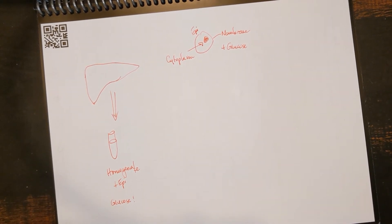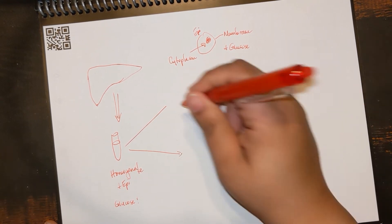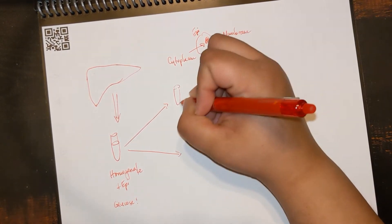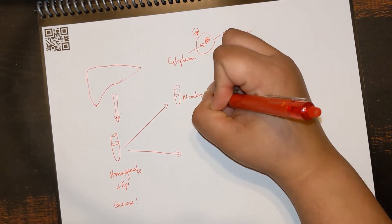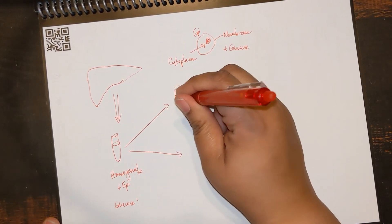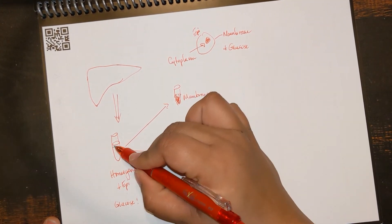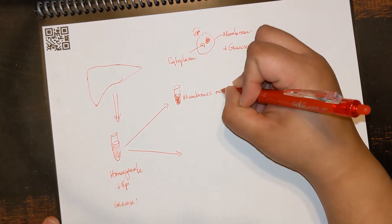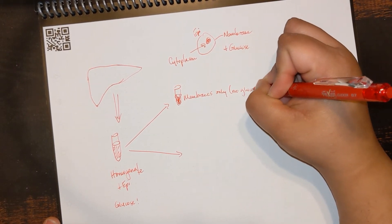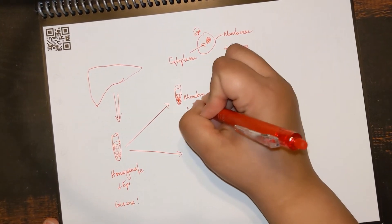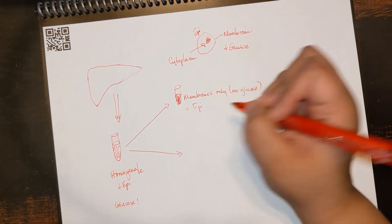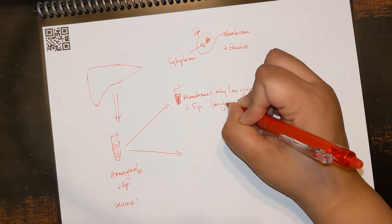He was able to see that a homogenate, even if all the components are not arranged into cells, is still enough for the epinephrine to lead to the activation of glycogen phosphorylase. So he took that homogenate and said, what happens if I isolate out just the membranes? When he had a test tube with just the membranes there, that did not have any activity of glycogen phosphorylase. Membranes only, no glucose. But then, he added epinephrine and that was actually not different. No glucose.